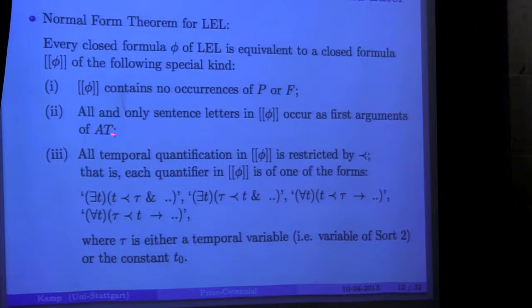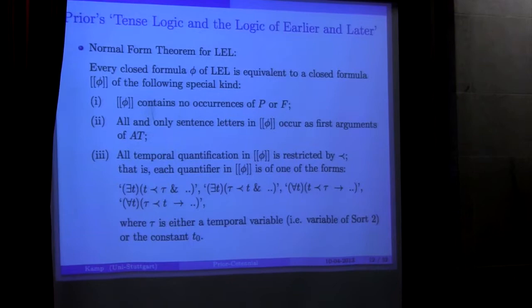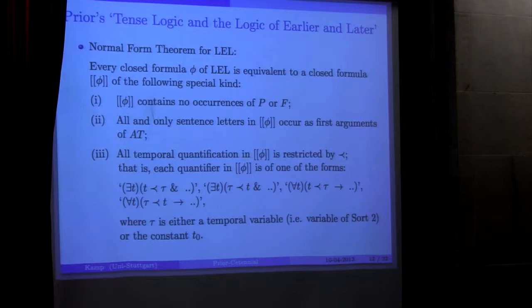So, the logic of earlier and later, in this sense, you can think of in more traditional logician terms as a two-sorted first-order predicate logic which has two sorts of objects. One I call sort one: sentence letters. And the other is variables—sorry, so there are two sorts. The sentence letter sort for the moment, with these letters P, Q, R, and then the terms of sort two are an infinite set of variables and one constant T0, which I use to denote some particular time you can think of as the now or the utterance time.